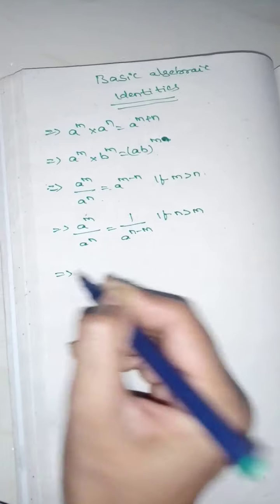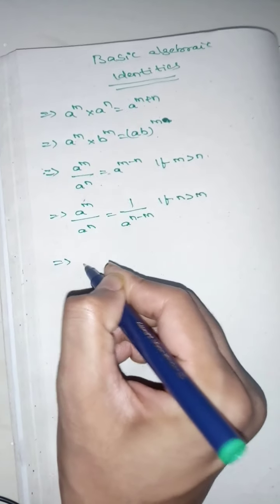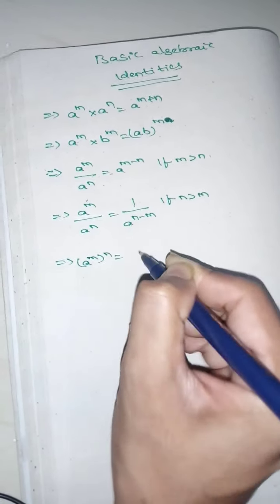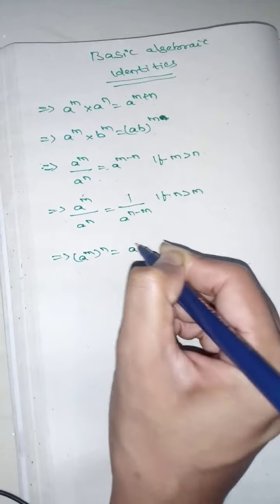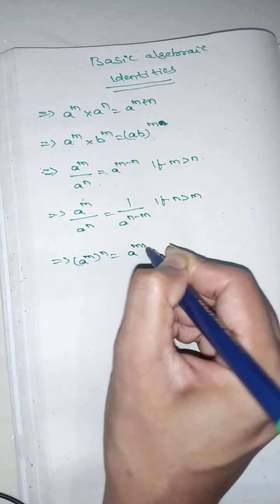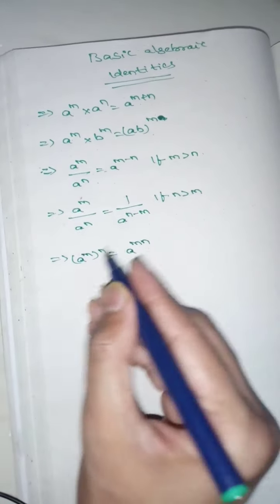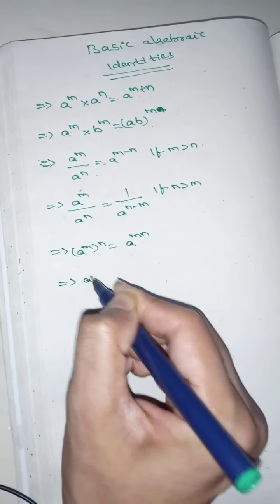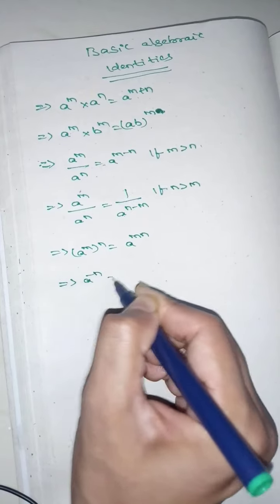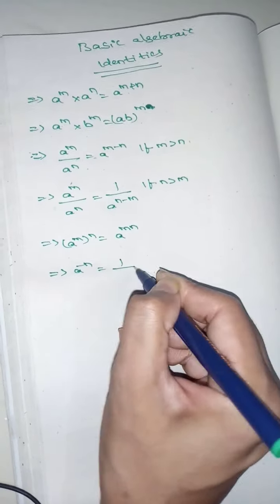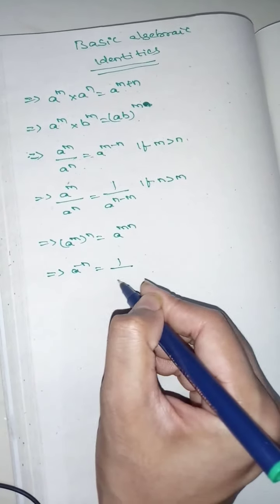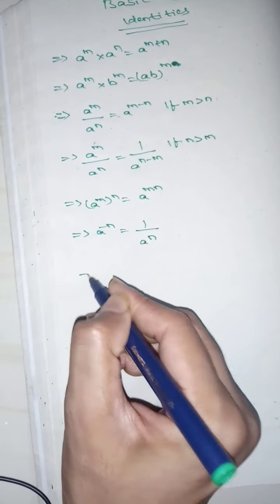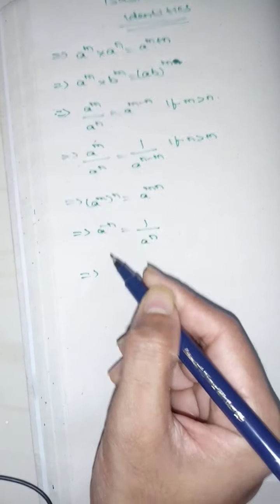Next, the power-to-power notation: a to the power of m, whole to the power of n, is equals to a to the power of mn. Then the negative index: a to the power of minus n is equals to 1 by a to the power of n.